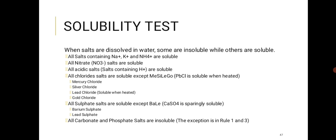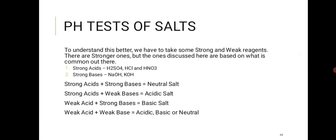For sulfate salts: barium sulfate and lead sulfate are insoluble. Calcium sulfate is not very soluble — it forms a suspension. All carbonate salts and phosphates are insoluble, except if they contain sodium, potassium, or ammonium ions.